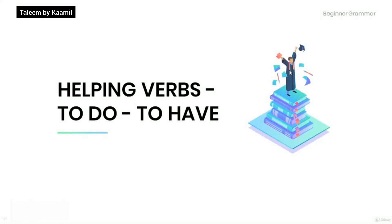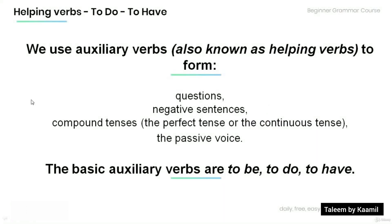Welcome to this tutorial. Today we're going to talk about the helping verbs to do and to have. Remember that we use auxiliary verbs, which are also known as helping verbs, to form questions, negative sentences, compound tenses, the perfect tense or the continuous tense, and the passive voice.